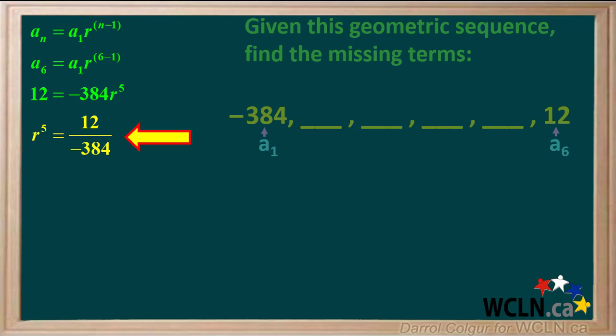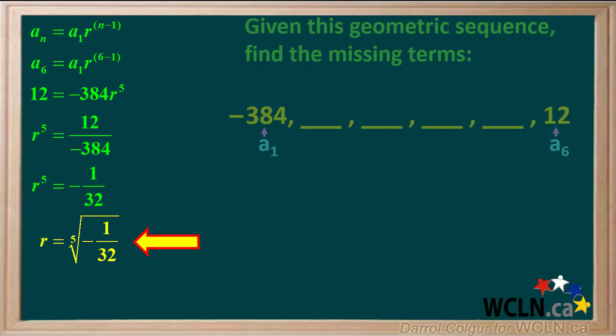We'll rearrange the equation to solve for r to the fifth: r to the fifth equals 12 divided by negative 384. If we divide both the numerator and denominator by 12 and put the negative sign in front of the fraction, we get r to the fifth equals negative 1/32. Taking the fifth root of both sides gives us r equals the fifth root of negative 1/32. You should recognize the fifth root of 32 as being 2, and of course the fifth root of 1 is 1. It's also useful to know that the odd root of a negative number is negative. Therefore, r equals negative 1/2.